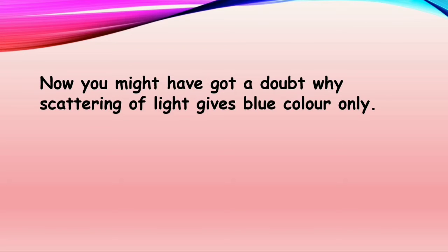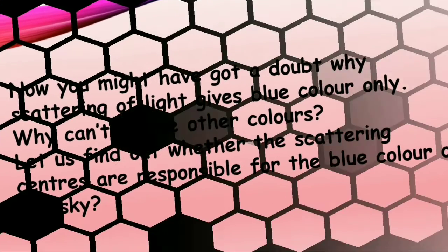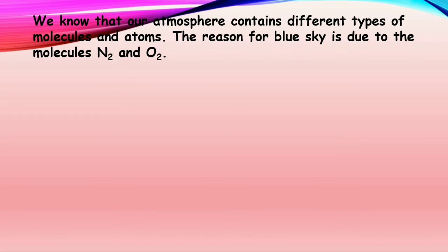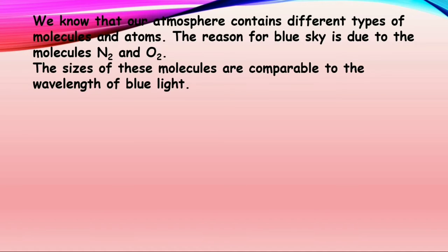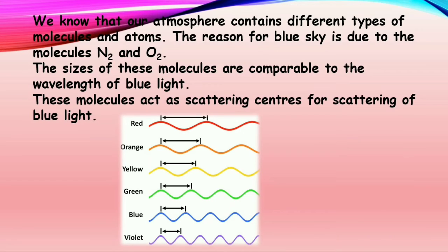Now, you might have got a doubt. Why does scattering of light give only blue color? Why can't it give other colors? Let us find out whether the scattering centers are responsible for the blue color of the sky. We know that our entire atmosphere contains different types of molecules and atoms. The reason for blue sky is due to the molecules of nitrogen and oxygen, N2 and O2. The sizes of these molecules are comparable to the wavelength of the blue light, and these molecules act as scattering centers for scattering of the blue light. Hence, blue light will appear.